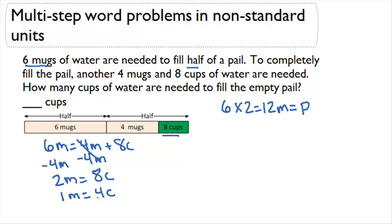So if one mug is worth four cups, and there are twelve mugs in a pail, I'm going to take my twelve from my mugs, I'm going to multiply it by my four from my cups, and I'm going to end up knowing that I'm going to need 48 cups to fill a pail.